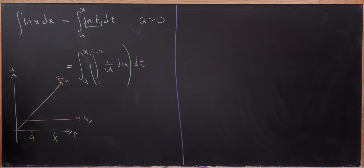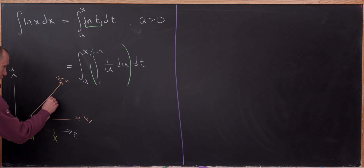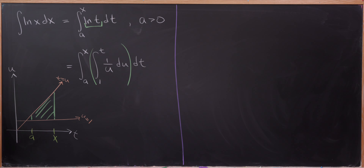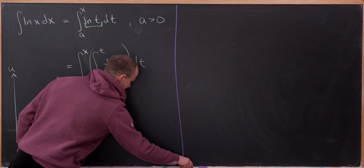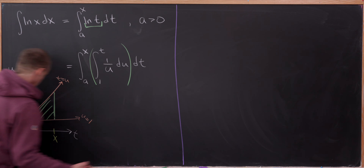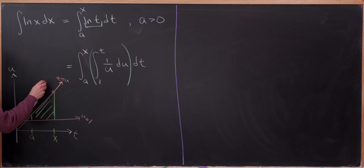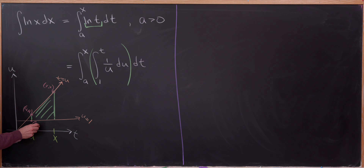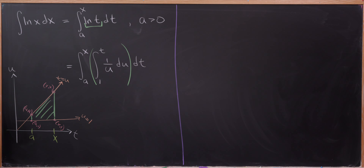Let's draw this region of integration. It's going to be this quadrilateral — a bit of a triangle that has been cut. The point up here is the coordinate (x, x), this coordinate here is (a, a), this one is (a, 1), and then this is the coordinate (x, 1). So that's going to be pretty useful.